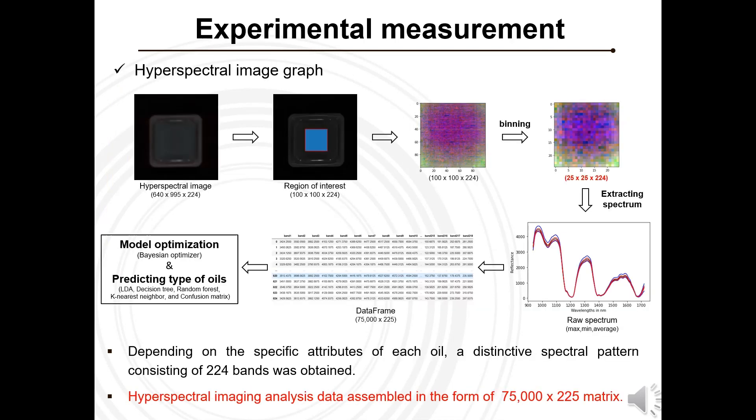Furthermore, an additional 75,000 learning data points were acquired from hyperspectral image data. One notable advantage of hyperspectral images is their capability to capture a larger volume of data, surpassing gas chromatography even with an equivalent number of experiments.